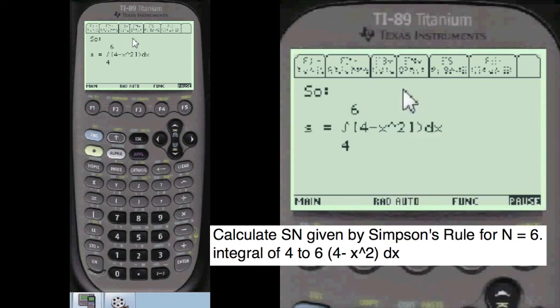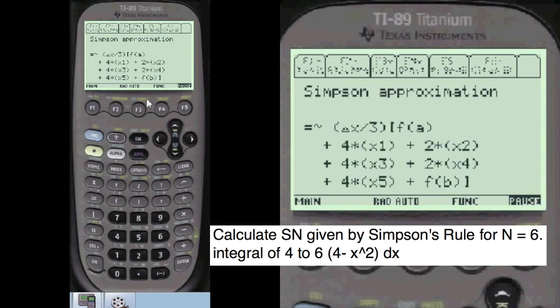And so we're going to use the Simpson approximation to do this integral here. And that formula is this right here, f of a and then 4 times x of 1, 2 times x of 2, 4 times x of 3, 2 times x of 4,